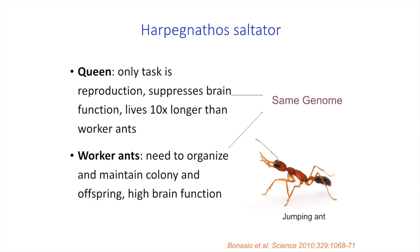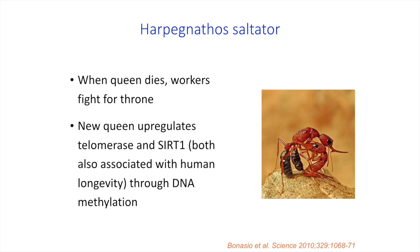Another example from the animal world is the so-called jumping ant. Just like bees, they have a queen and worker ants. The queen is large, only reproduces, and has low brain function — you don't need much brain for reproduction. Whereas the worker ants have to be smart because they keep the whole colony going, maintaining it, but they do not reproduce. Now what happens when the queen ant dies? The workers fight for the throne, and the winner upregulates some genes — in particular telomerase and CRT1 — which are longevity genes, because the queen has about ten times the lifespan of the worker ants.